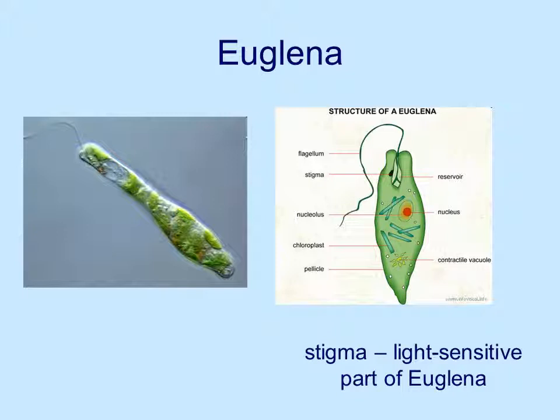Here is a euglena. A euglena has a flagellum which moves it around. It has chloroplasts in it — you can see the green euglena on the left with a number of chloroplasts. It also has a little structure called a stigma, which is the light-sensitive part of the euglena. The stigma allows it to orient towards food, and we'll be talking about that in a later chapter.